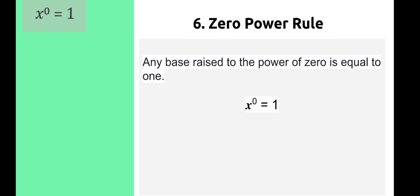Six, we have the zero power rule, and this is a critical rule that we need to remember. Anytime we see a zero exponent, we equate it to 1. Any base raised to the power of 0 is equal to 1. Anytime you see a zero exponent, the answer is automatically going to be 1.